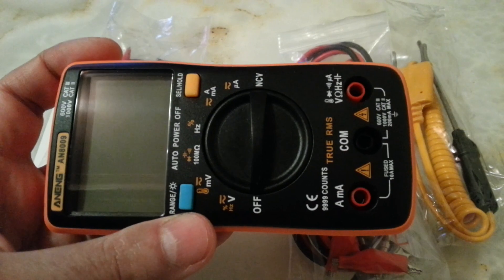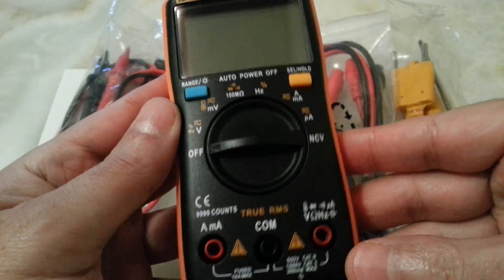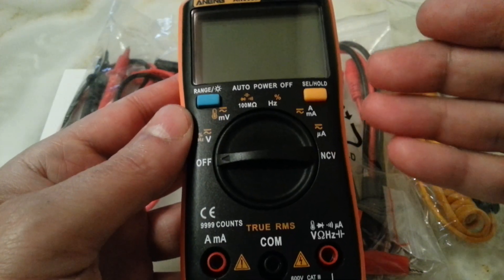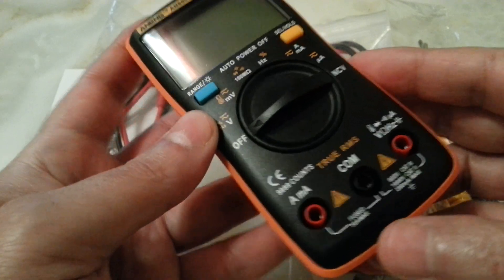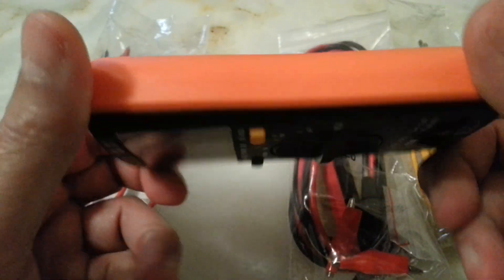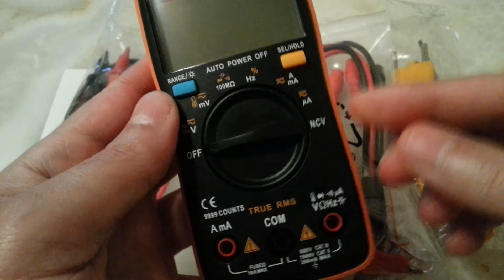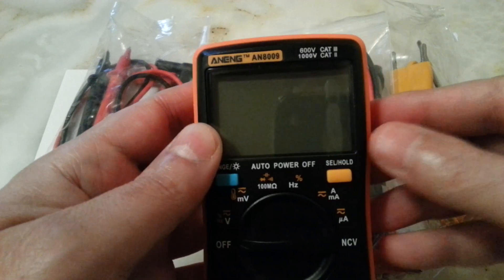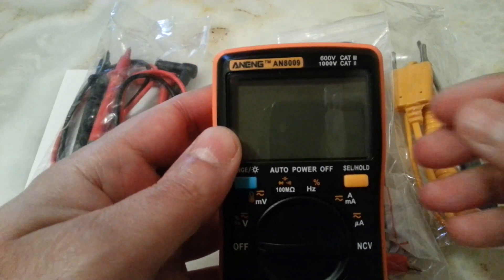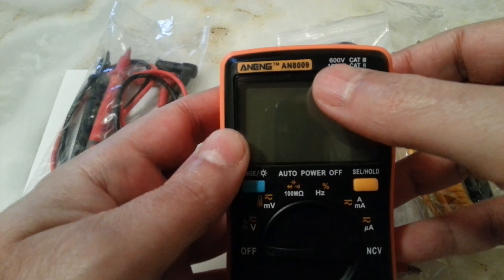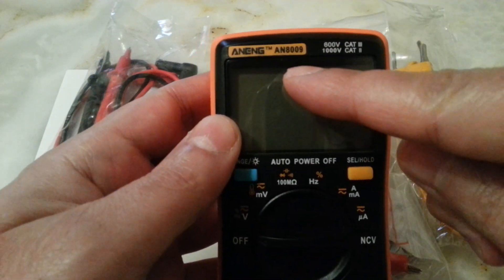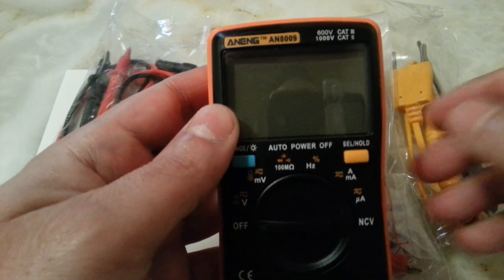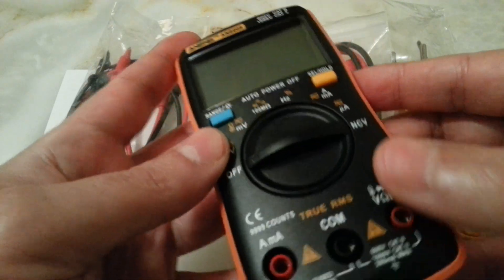There are many videos on YouTube, and some of them are really in-depth reviews about this. So I'm not going through all the details. The only thing I'm going to add to this review is about the features they have added. The very latest one that you can find on YouTube is an ANENG AN8008, but this one is an AN8009, and there are several features added.